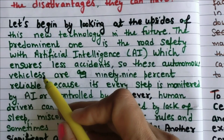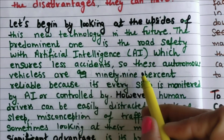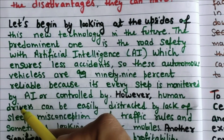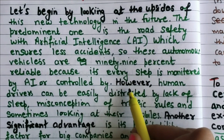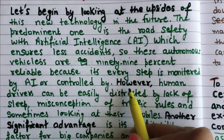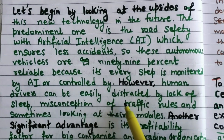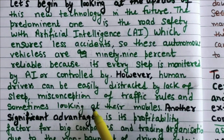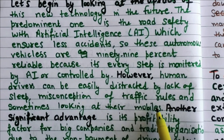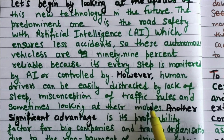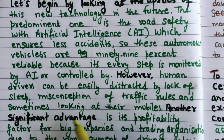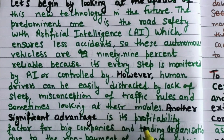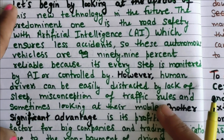'Road safety with artificial intelligence ensures less accidents, as these autonomous vehicles are 90% reliable because every step is monitored and controlled by AI. However, human drivers can be easily distracted by lack of sleep, they can cause more accidents through misconception of traffic rules, or sometimes while looking at their mobiles' — a very common reason for road accidents nowadays.